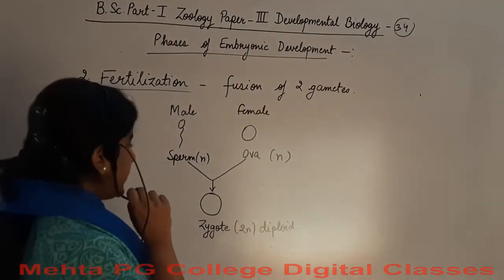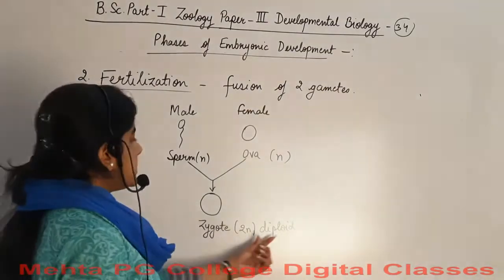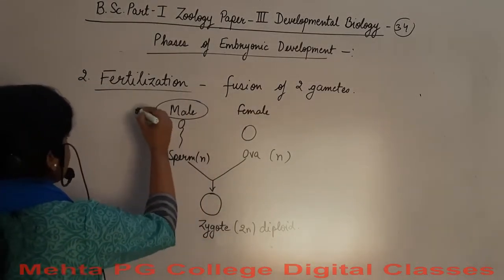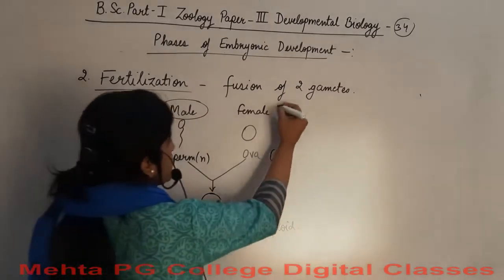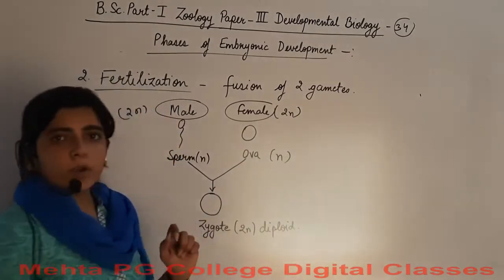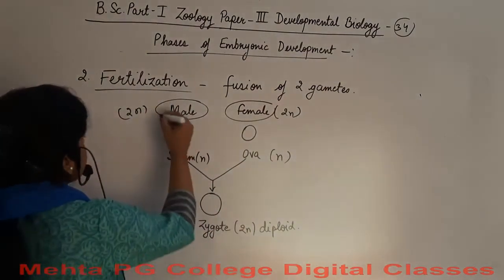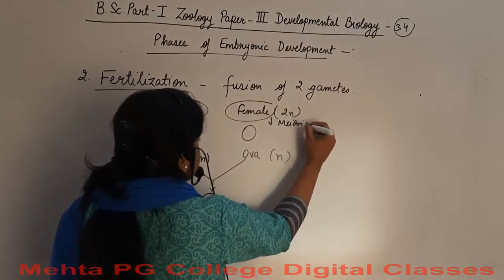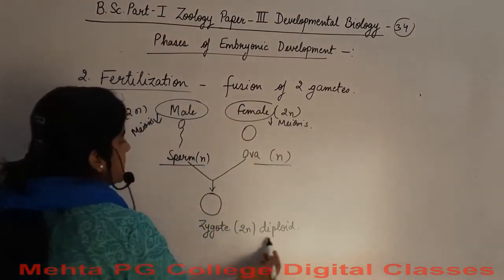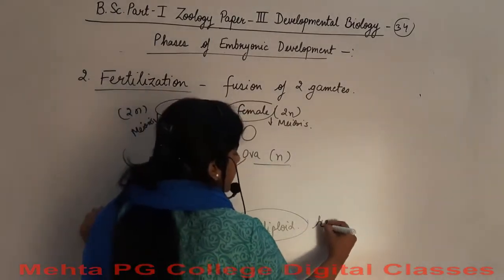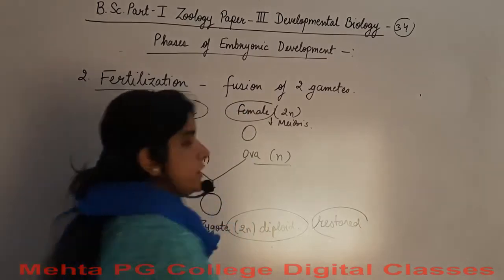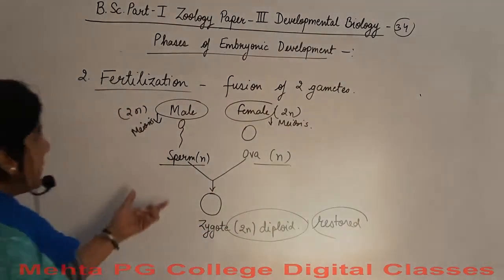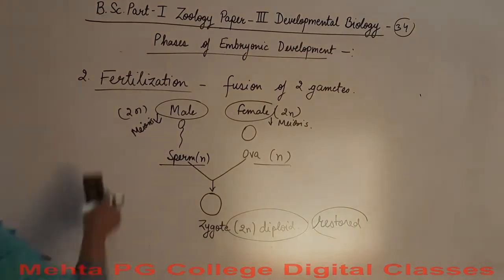In the zygote, ploidy is maintained. Because the male had diploid chromosomes, after meiosis they were haploid, and the same for the female. After fertilization they are diploid again. So restoration of the chromosome set occurs after the formation of the zygote. This is all about fertilization, the second process of development.